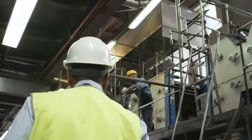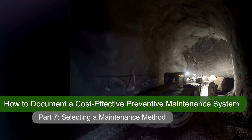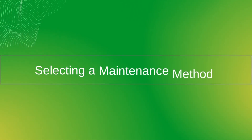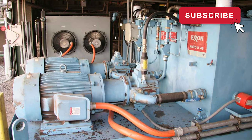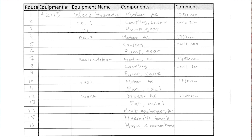Hello, this is Tor from IDCON and this is part 7 in how to document a cost-effective preventive maintenance system. If you recall from video 6, we went out to the plant and we had our hydraulic unit right here and we collected a bunch of information regarding the hydraulic unit. Now, the next step is to start documenting the PM, the preventive maintenance actions, to this.